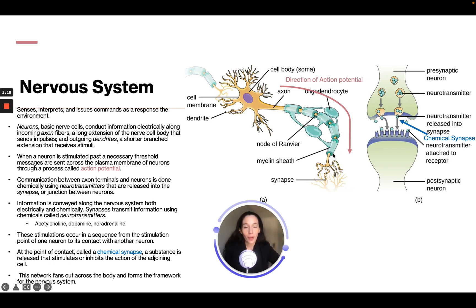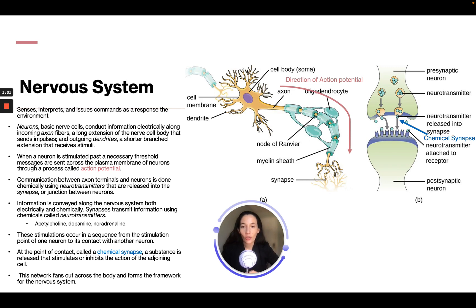These are myelin sheaths, which protect the cells — we'll talk about those a little later. When a neuron is stimulated past a necessary threshold, messages are sent across the plasma membrane through a process called action potential, which is that electrical signal getting stimulated.